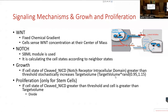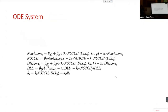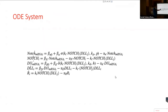The SBML ODEs include Notch mRNA, Notch protein, Delta mRNA, Delta protein, and R — the cleaved Notch receptor — which accumulates over time and degrades at a constant rate.